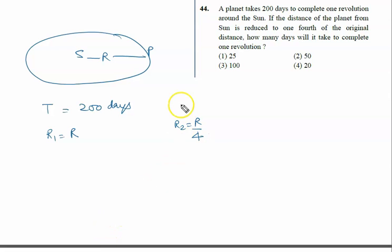How many days will it take to complete one revolution? We have to calculate the value of T2, and T1 is given to us. We all know very well Kepler's law: T square is proportional to R cube.